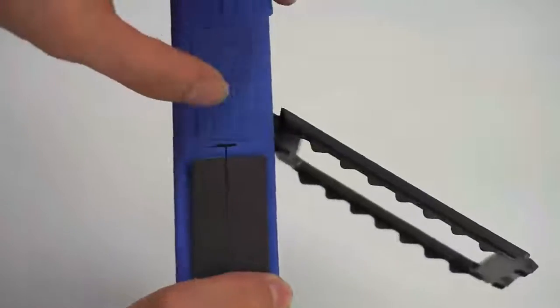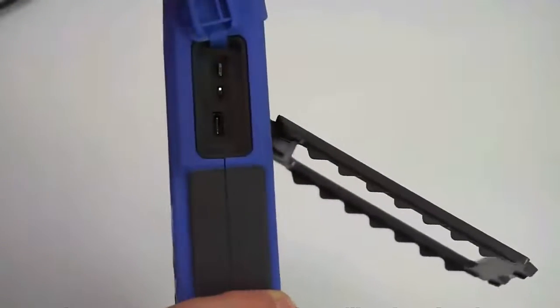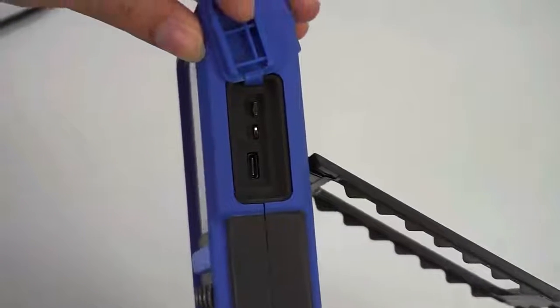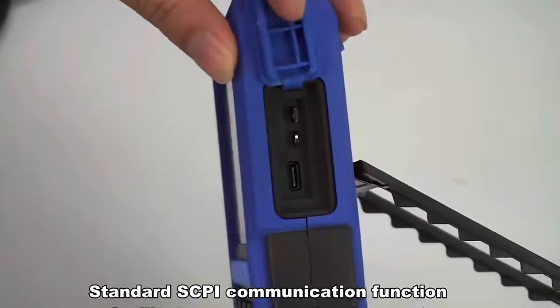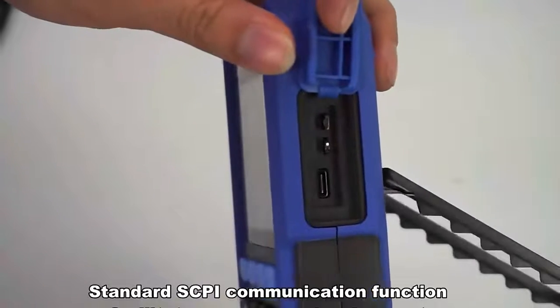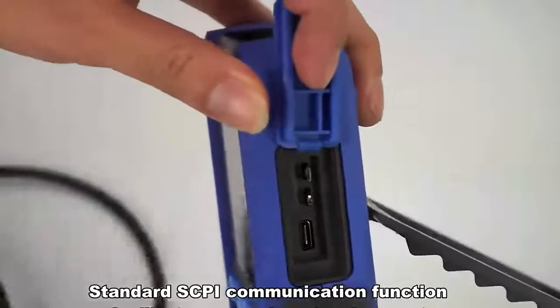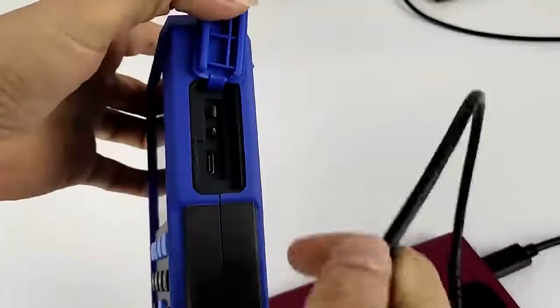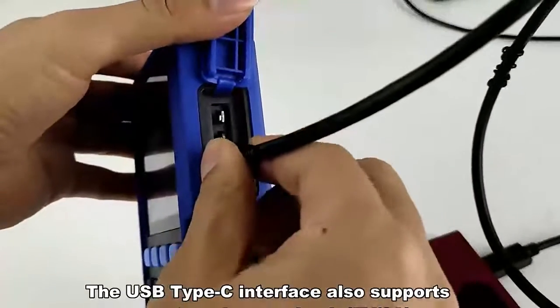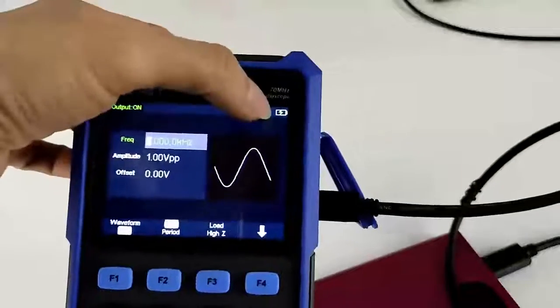On the side of HDS200 Series, there are oscilloscope probe calibration signal and USB Type-C interface to communicate with computer. Standard SCPI communication function facilitates secondary development. The USB Type-C interface also supports an external power bank, convenient for long-term outdoor use.